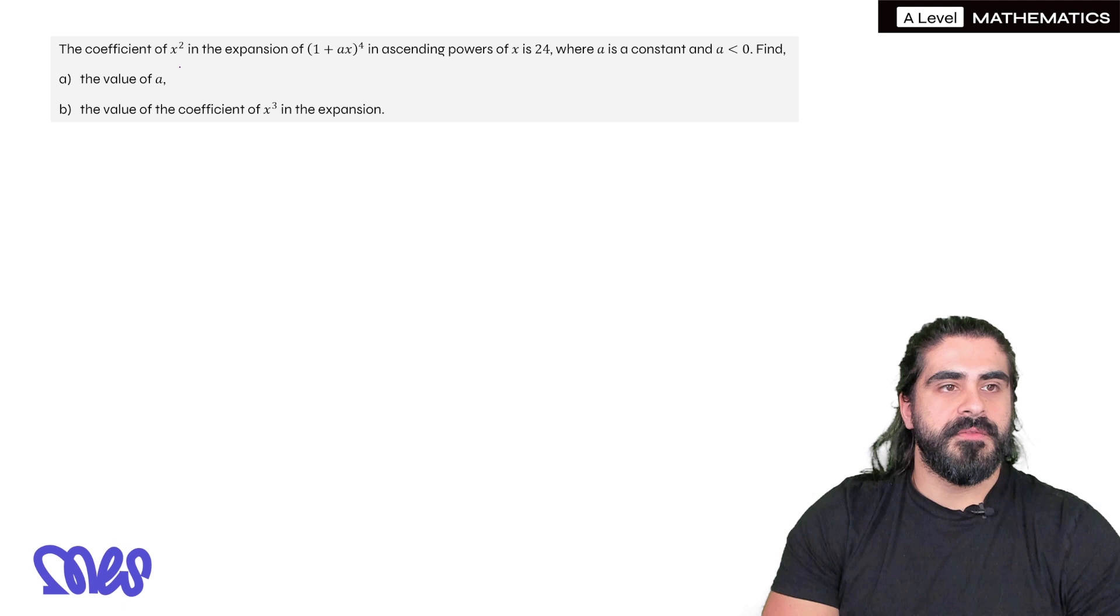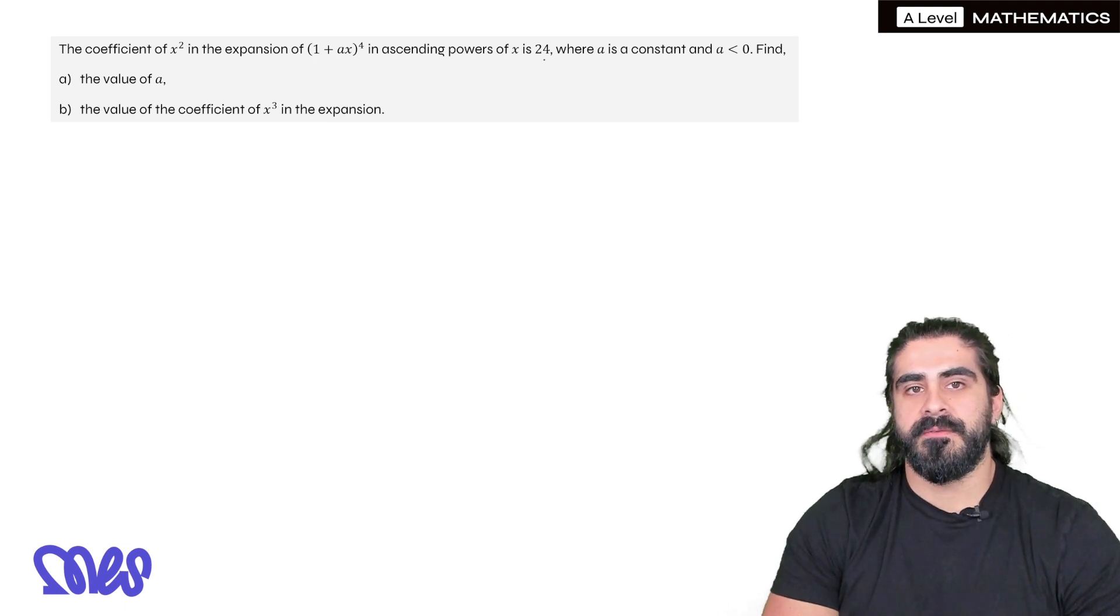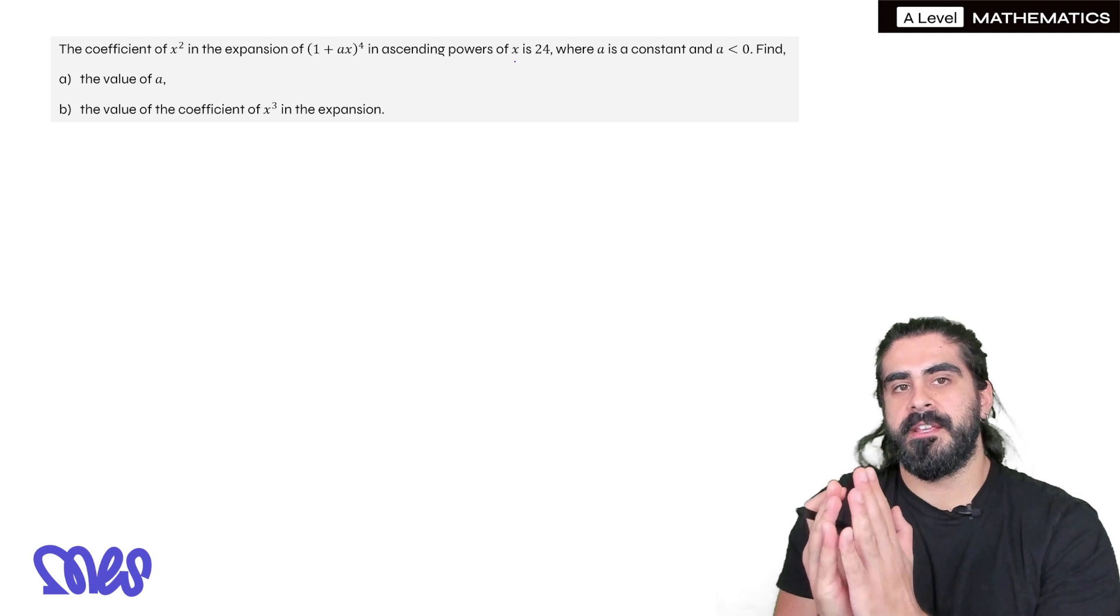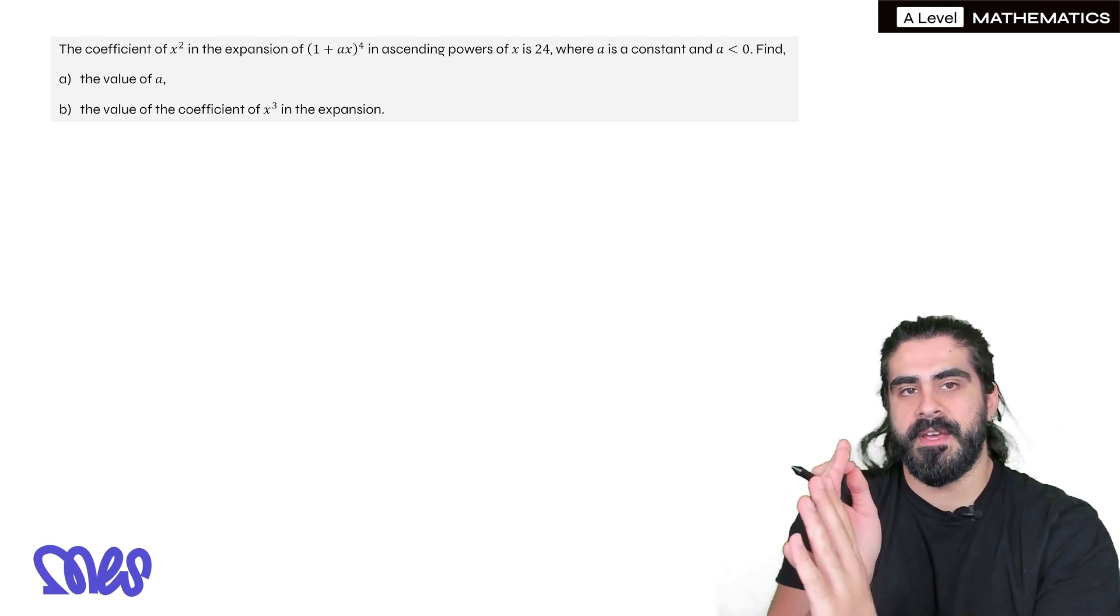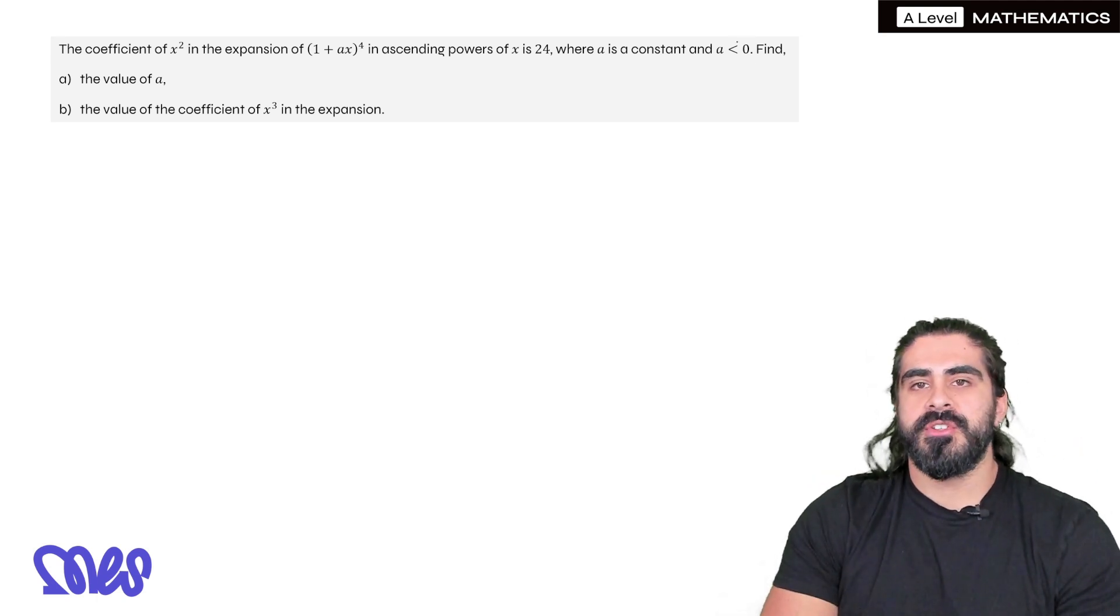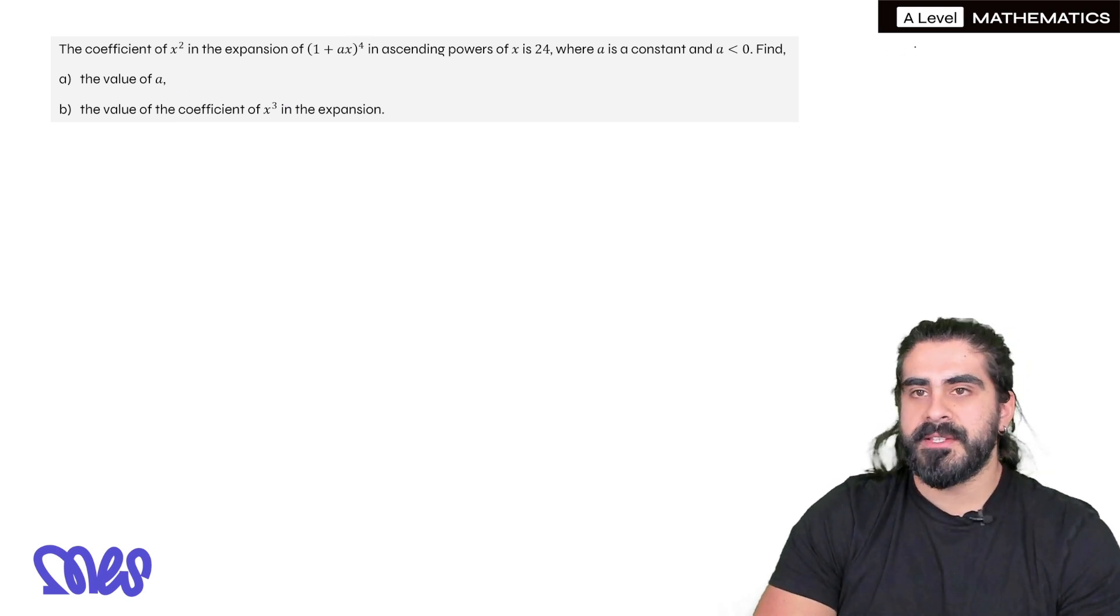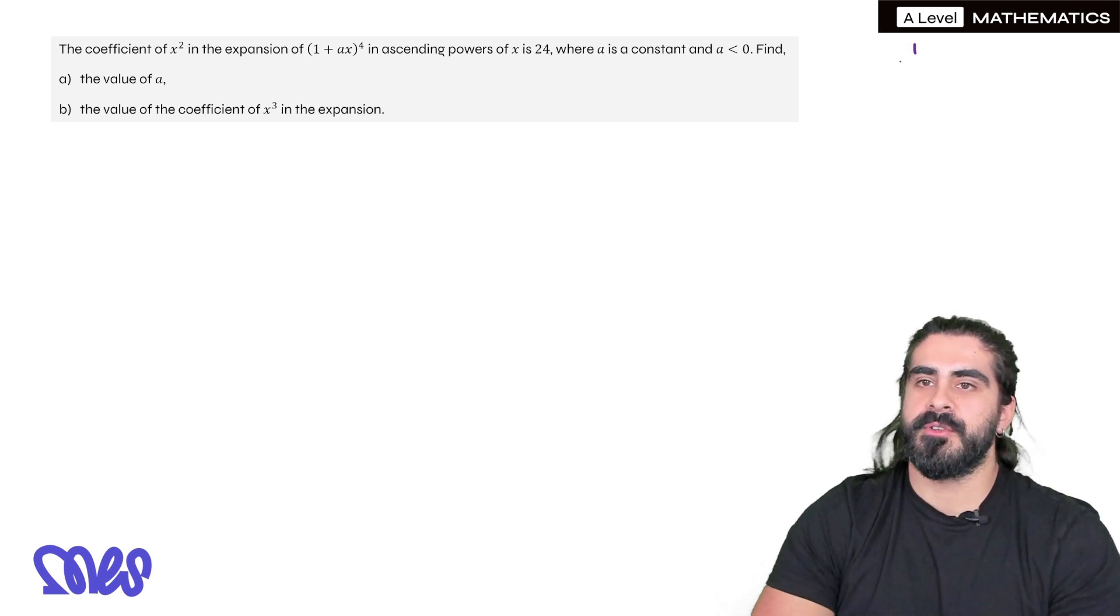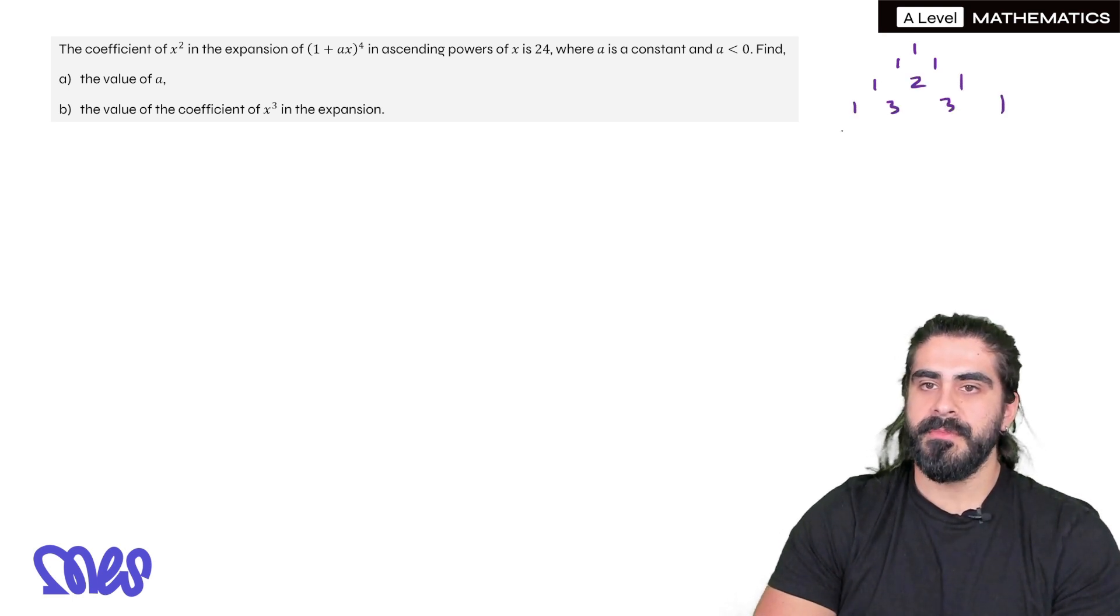Okay next question. The coefficient of x² in this expansion (1 + ax)⁴ in ascending powers of x is 24. So ascending powers of x means that the powers of x need to go up. So you wouldn't start with x⁴, you would start with the numerical value independent of x, then we're going to go up. a is a constant, a is negative, find the value of a. So it's power of 4. So if we were to do Pascal's triangle really quickly, remember the number 1 on the top means power 0, so we don't even really look at that. 1, 1 that's the first line. 1, 2, 1 second, third, and the fourth.